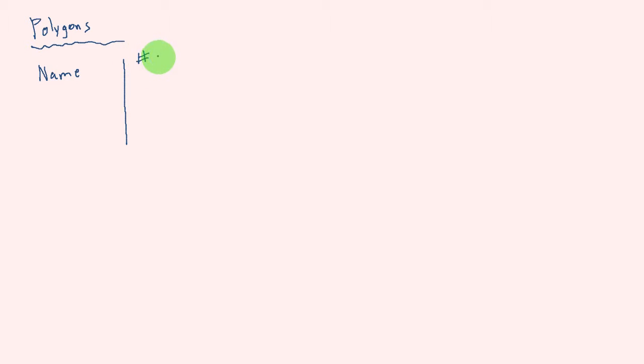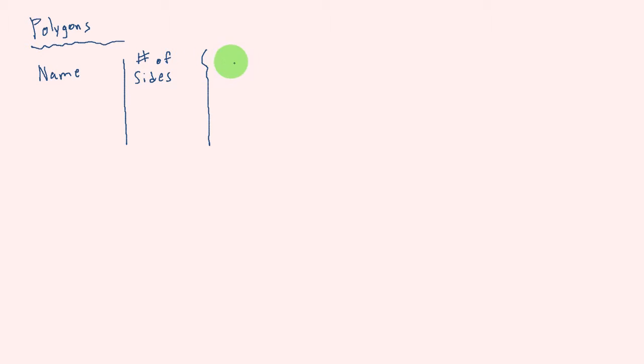So a couple things that we're going to do here: we're just going to name the different types of polygons, and from there we can look at how many sides — the number of sides that are in each polygon. Also, what we might want to look at are two different types of polygons.